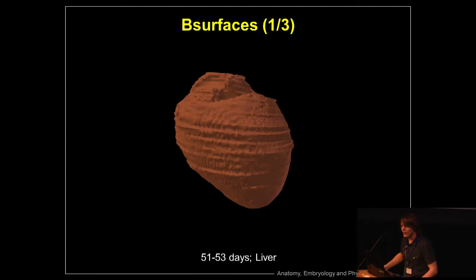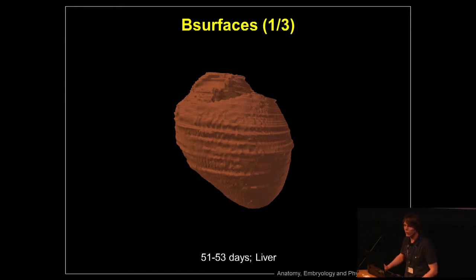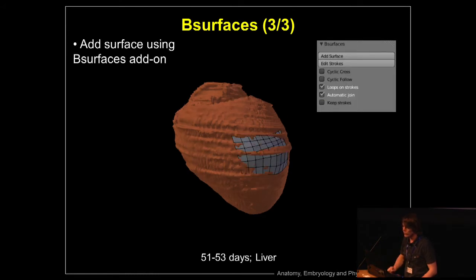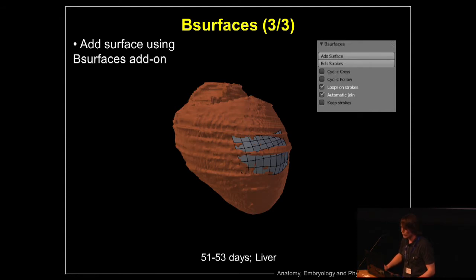Another trick is B-surfaces. I heard it didn't work, but it still works in my version 2.71. B-surfaces is great for creating solid models. The liver is a big solid model with large flat surfaces that go a little bit round here and there. With B-surfaces we can grab the grease pencil, draw on it, and quickly generate a surface. I actually did this in about three seconds, so you can imagine it will really speed up our development for larger areas.